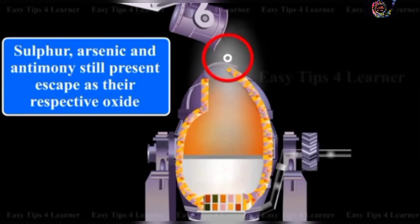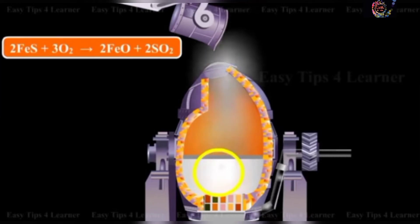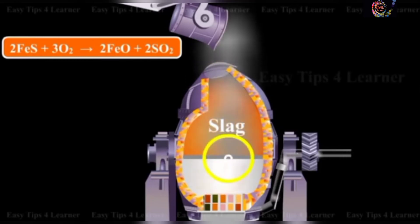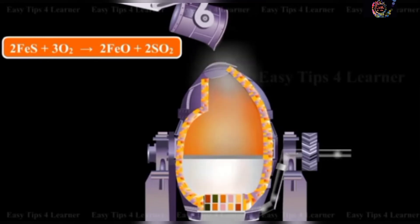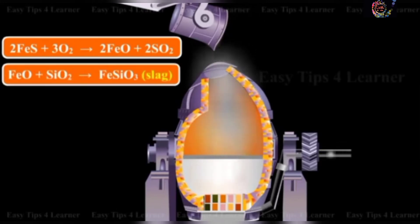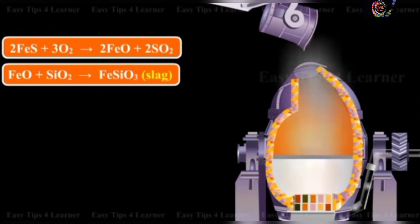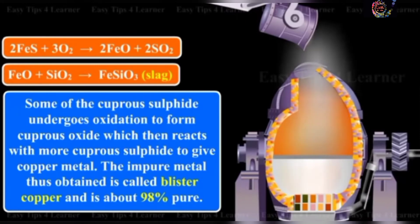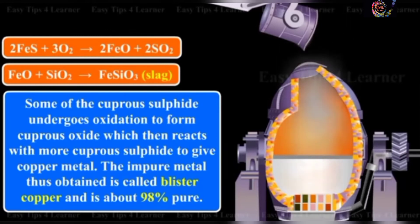Ferrous sulfide present in the matte is oxidized to ferrous oxide, which combines with silica to form slag: iron sulfide plus oxygen gives iron(II) oxide plus sulfur dioxide, and iron oxide plus silicon dioxide gives ferrous silicate, a fusible slag. Some of the cuprous sulfide undergoes oxidation to form cuprous oxide, which then reacts with more cuprous sulfide to give copper metal.